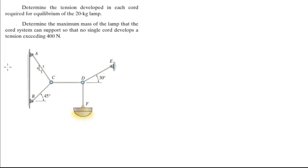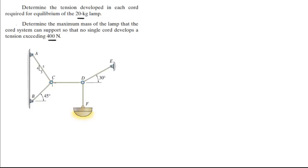For more videos visit forthesakeofducation.com. We have a system of cords sustaining the weight of a lamp. We need to find the tension developed in each cord for equilibrium if the lamp weighs 20 kilograms, and also find the maximum mass the lamp can have if each cord can sustain a maximum of 400 newtons. To do this problem, I like to solve all the forces in terms of the mass — that's a very good technique.